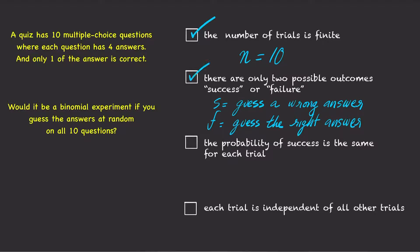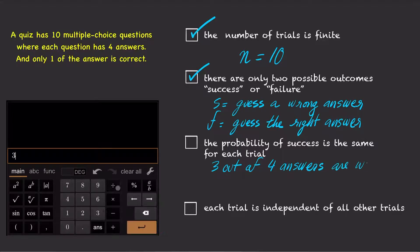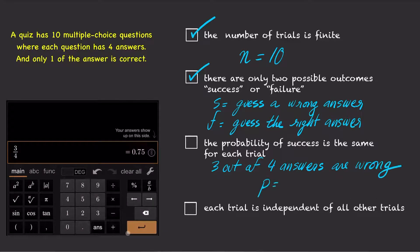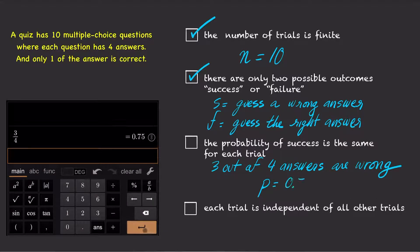The third condition is also satisfied because the probability of success is the same for each trial. Each time you guess an answer at random, the probability of success — which is getting the wrong answer — is always 3 out of 4, or 0.75.